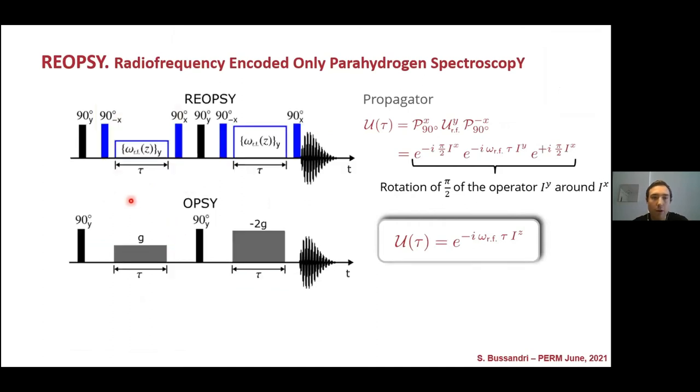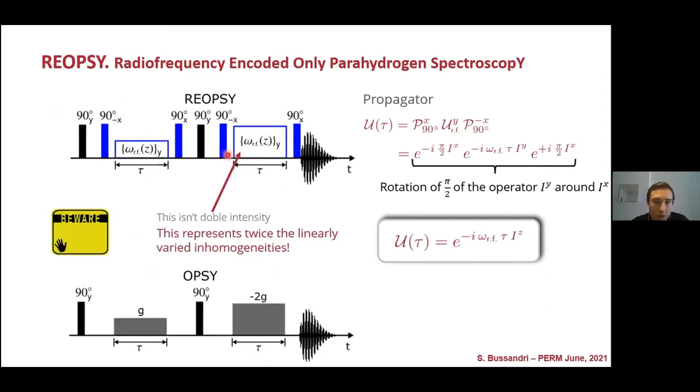So coming from the OPSY sequence, we can see that every time interval that we had a static magnetic field gradient, we can replace it by these three blocks right here and we can rename this new sequence as RE-OPSY. We must be careful with this block right here, which represents twice the linearly varying homogeneities, which in our particular case was applying twice the RF intensities.